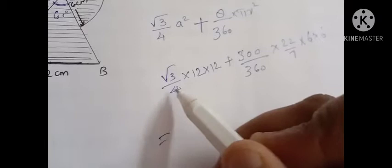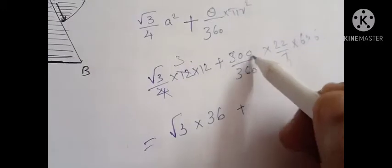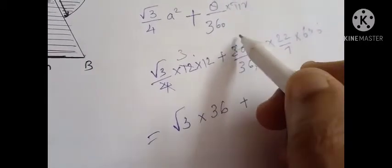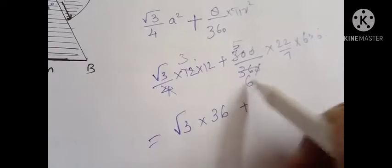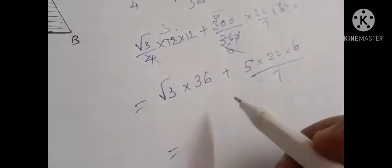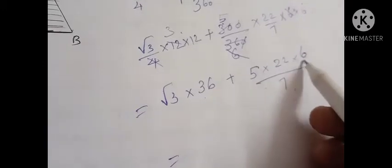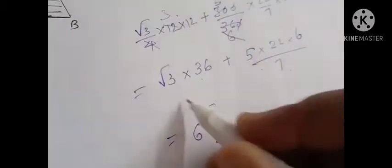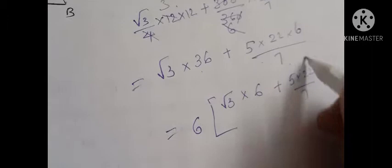Simplifying: the 4 and 12 can be cancelled to give √3 × 3 × 12, which is 36√3. For the sector part, simplifying 300/360 gives 5/6, and 6 × 6 = 36; cancelling one 6 leaves 5 × 22 × 6/7, which equals 2 × 6/7 remaining terms. Taking 6 as common factor: 6(√3 × 6 + 5 × 22/7).